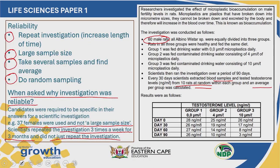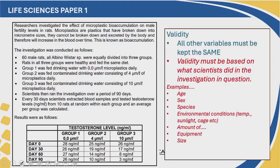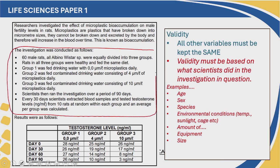Let's have a look at how validity differs from reliability. Validity speaks about how well you did the investigation, how accurate you were, and how correctly it was carried out. When we speak about validity we need to ensure that the variables in our investigation are kept the same. We are looking at the procedure of the investigation because validity is how you carried out the investigation. So what variables did we keep the same in this investigation?